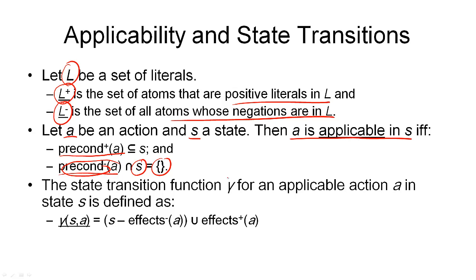Now we can define the state transition function gamma for a given state — that's the state in which we are initially — and the action A that we are applying. We start off with a state and deduct all the negative effects; this is the delete list, so we delete these from the state. Then we add all the positive effects — this is the add list. So we start off with a set of ground atoms, remove some ground atoms, and add some ground atoms. This is the state we get as a result of applying the state transition function in state S using action A.